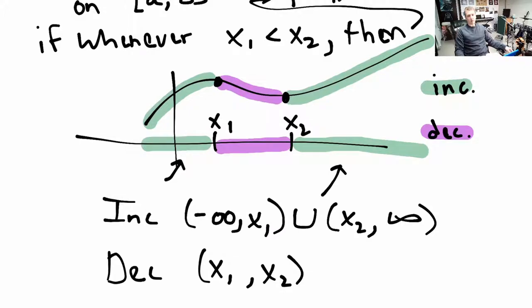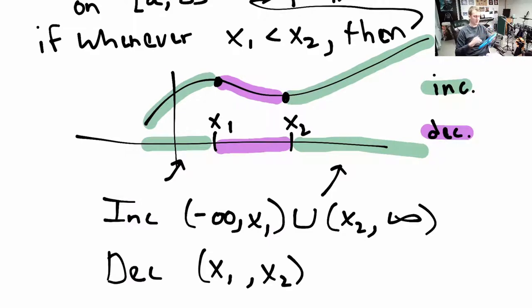And those points where the graph is neither increasing nor decreasing are what we call local or global maximums or minimums. We call them in general extrema — it's where our graph takes extreme values. And that's the next thing for us to talk about.